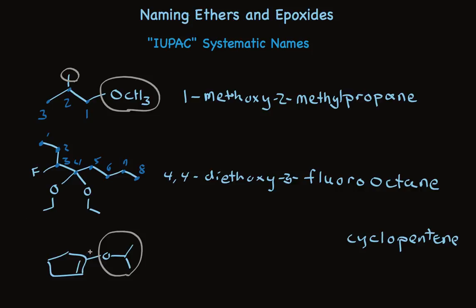We'll number starting where the substituent is. So we'll call this 1-2-3-4-5. And because this is the isopropoxy substituent, we'll put that name in front of cyclopentene, and then use the number to say where it is. It's on the 1-carbon.